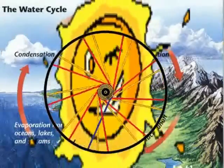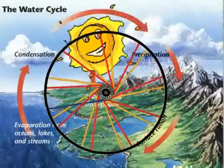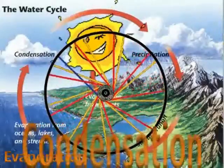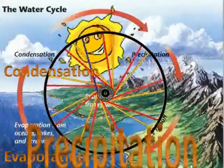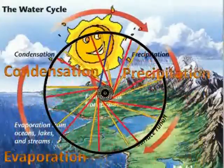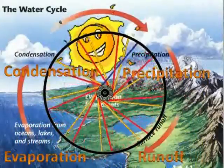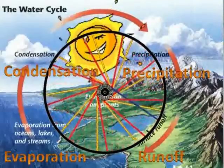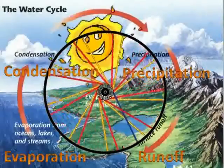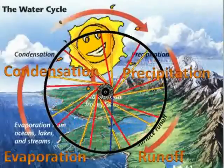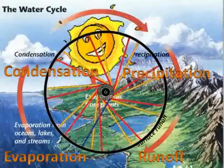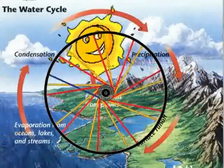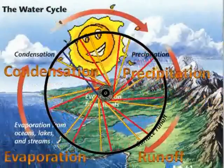The cycle does not end here. The sun continues to heat the earth. Evaporation, condensation, precipitation, and runoff all continue. These four processes all occur at the same time.